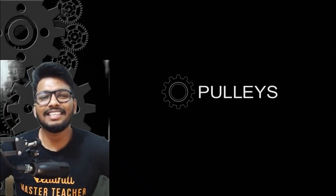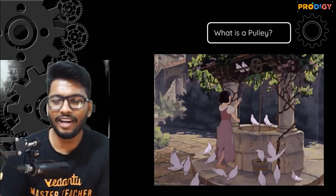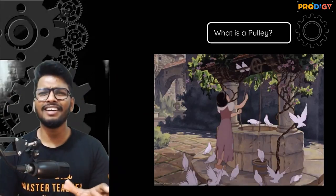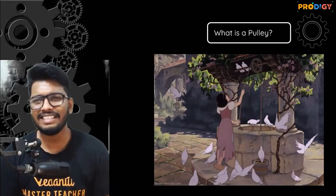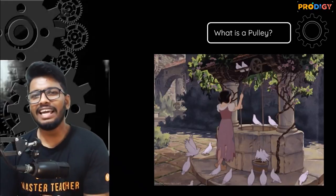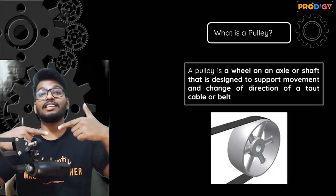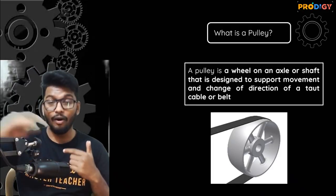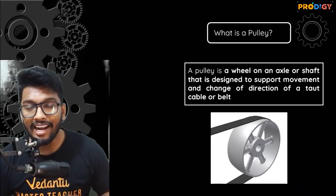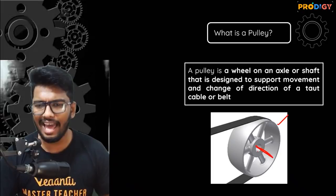To define a pulley, words alone aren't enough, so I'm going to show you a GIF. You've probably seen one of these in cartoons, movies, or real life — especially at a well where you use a pulley to pick up water. A pulley is a simple machine which has an axle, to which a wheel is fixed, and a rope goes over that wheel. This is what it looks like: you have the wheel, an axle running through it in the middle.